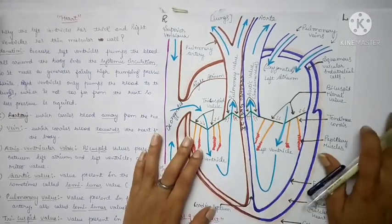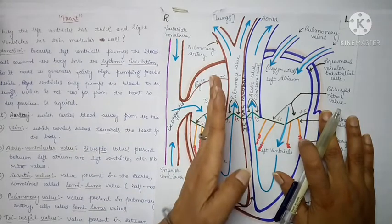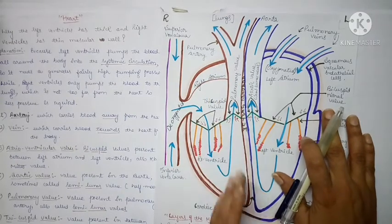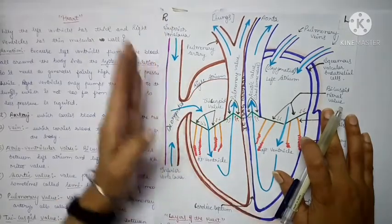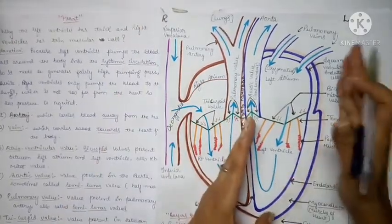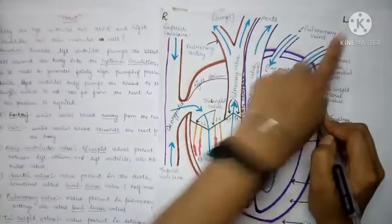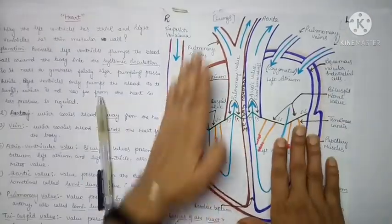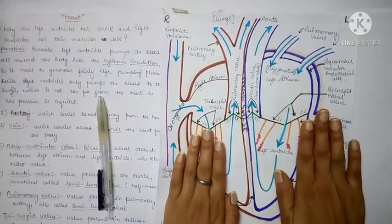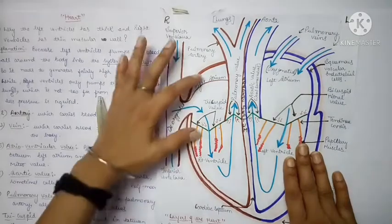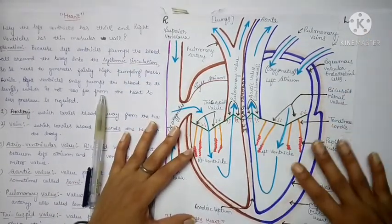When we talk about the heart, we think of it as if we are looking at a person in front of us. If someone is in front of you, this side will be the right side and this side will be the left side. That is why we have left atrium, right ventricle, left atrium, and left ventricle.